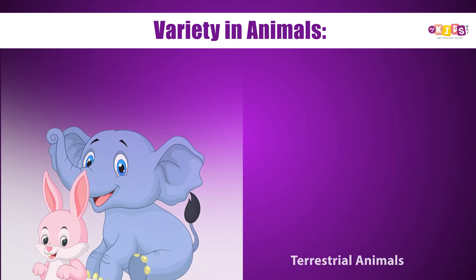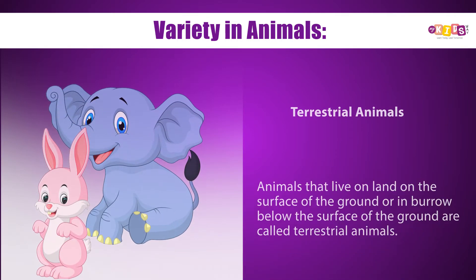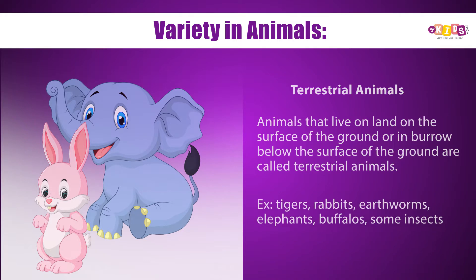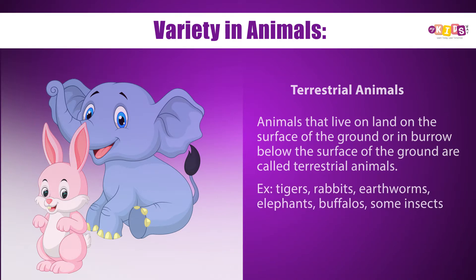Terrestrial animals: Animals that live on land — on the surface of the ground or in burrows below the surface of the ground — are called terrestrial animals. Examples include tigers, rabbits, earthworms, elephants, buffaloes, and some insects.